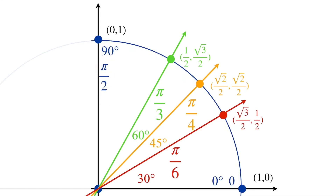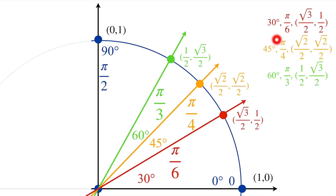Now we've filled out a quarter of our unit circle. It only looks like a quarter, but in reality we've done the bulk of the work. Basically everything else in the unit circle has the same reference angles as these three angles, which means they share many of the same characteristics. I'm going to copy down these angles in degrees and radians, and the points where they intersect with the circle, to fill out the rest. Everything on this unit circle will be color-coded by reference angle, so hopefully it will be easier to see the pattern.